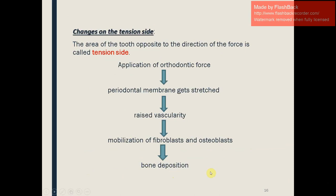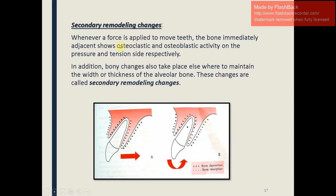On the tension side — the area opposite to the direction of force — the periodontal ligament gets stretched, there is raised vascularity, mobilization of fibroblasts and osteoblasts, and bone deposition occurs. Secondary remodeling changes: when force is applied, the bone immediately adjacent shows osteoclastic activity on the pressure side and osteoblastic activity on the tension side. Additionally, bony changes occur elsewhere to maintain the width and thickness of the alveolar bone — these are called secondary remodeling changes.